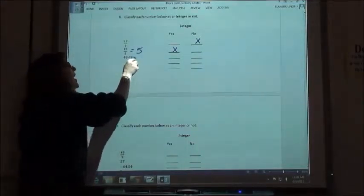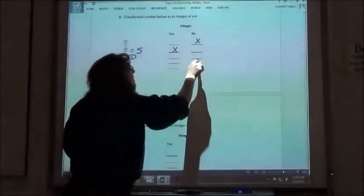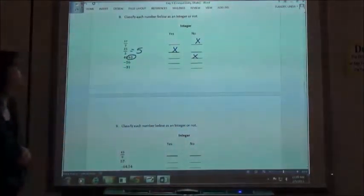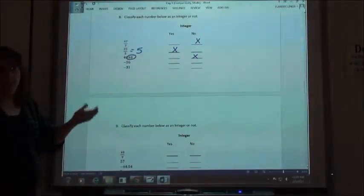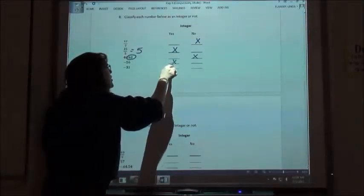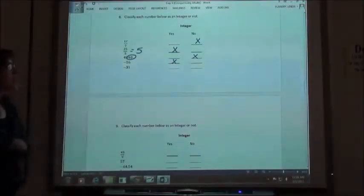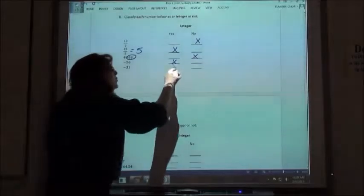48.63 has the decimal on the end. It's not a nice whole number. It's not an integer. Negative 56 is a whole number, is an integer. Negative 30 is a whole number, is also an integer.